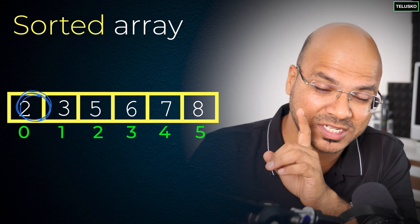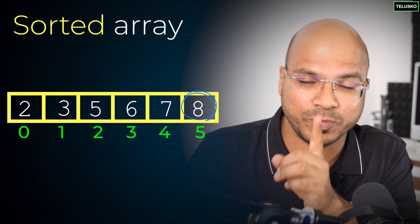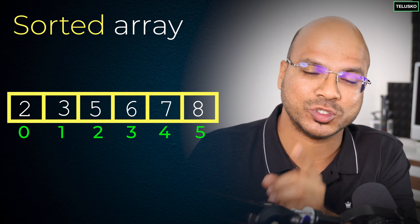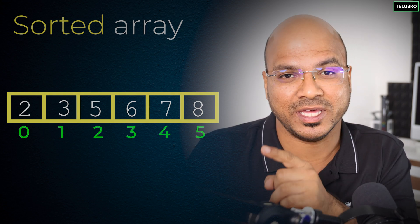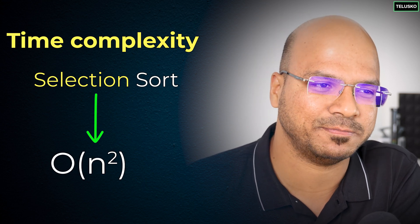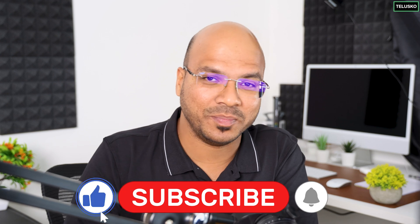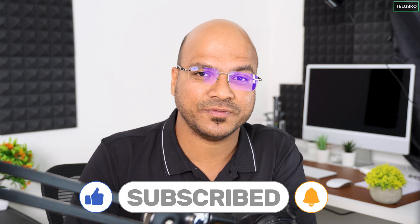Compared to bubble sort, we're still going from start to end with an outer loop and an inner loop. But we are doing swapping only once per pass, in the outer loop. That's the advantage of selection sort over bubble sort. The overall time complexity is still O(n²), but it is better than bubble sort in terms of the number of swaps. How to implement this in code will be covered in the next video.